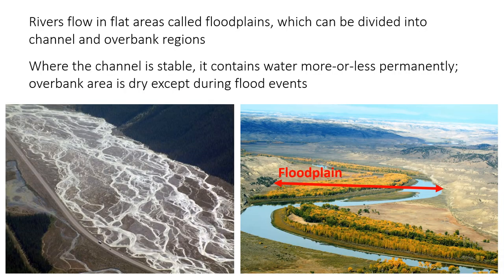First, some terminology to describe parts or components of river systems. Rivers flow through a floodplain, which is the flat area of the valley floor filled with sediments deposited by the river itself. The width of the floodplain is marked in the photo on the right — it's the area between the hill slopes with trees on it — and likewise on the left it's that large area between the hills with trees.